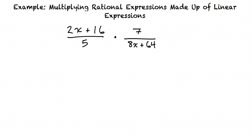Again, we will simplify each expression as much as we can. 2x plus 16 has a greatest common factor of 2, which we can divide out, and 8x plus 64 has a greatest common factor of 8, which we can also divide out, written as 2 times x plus 8 over 5 times 7 over 8 times x plus 8.